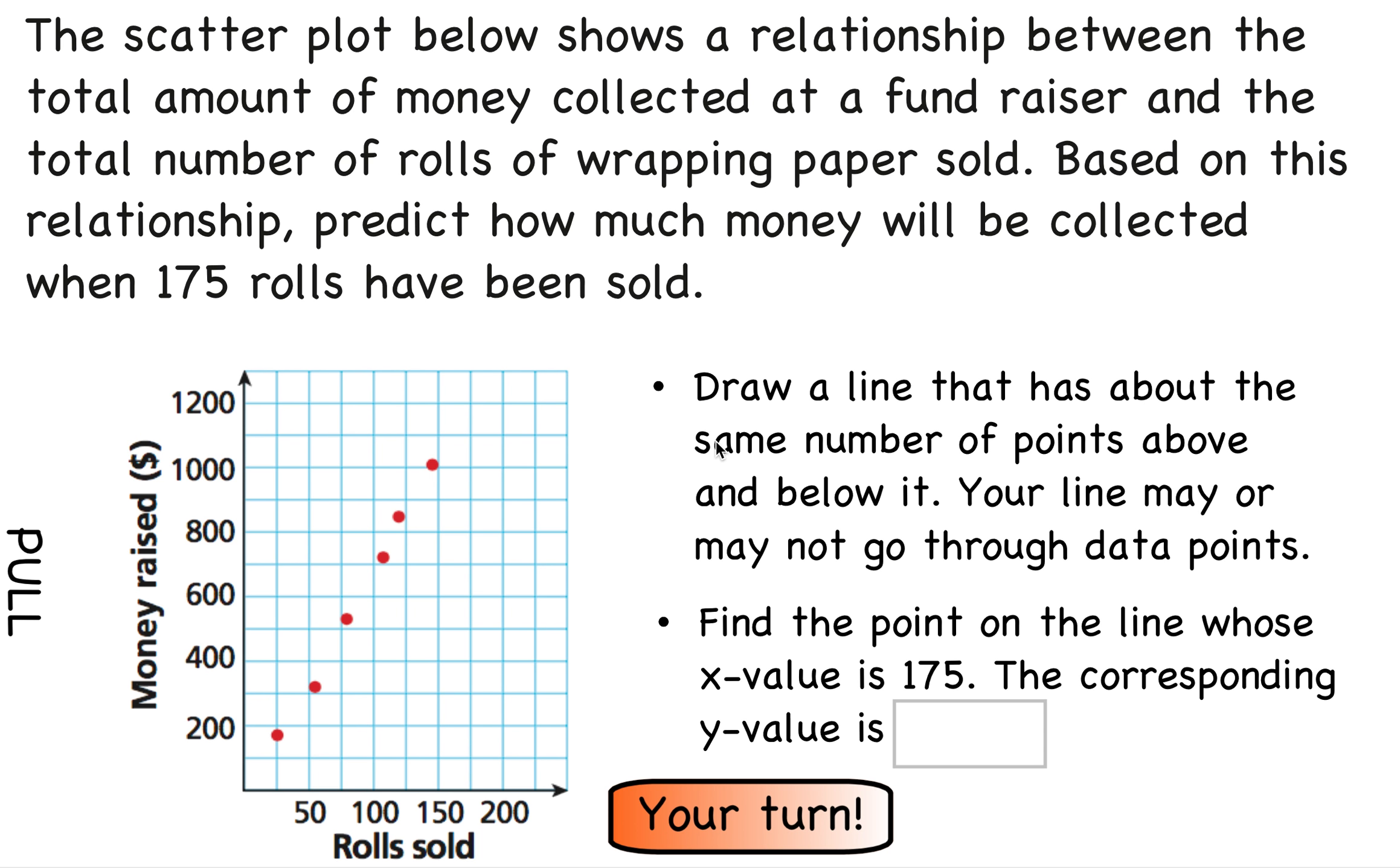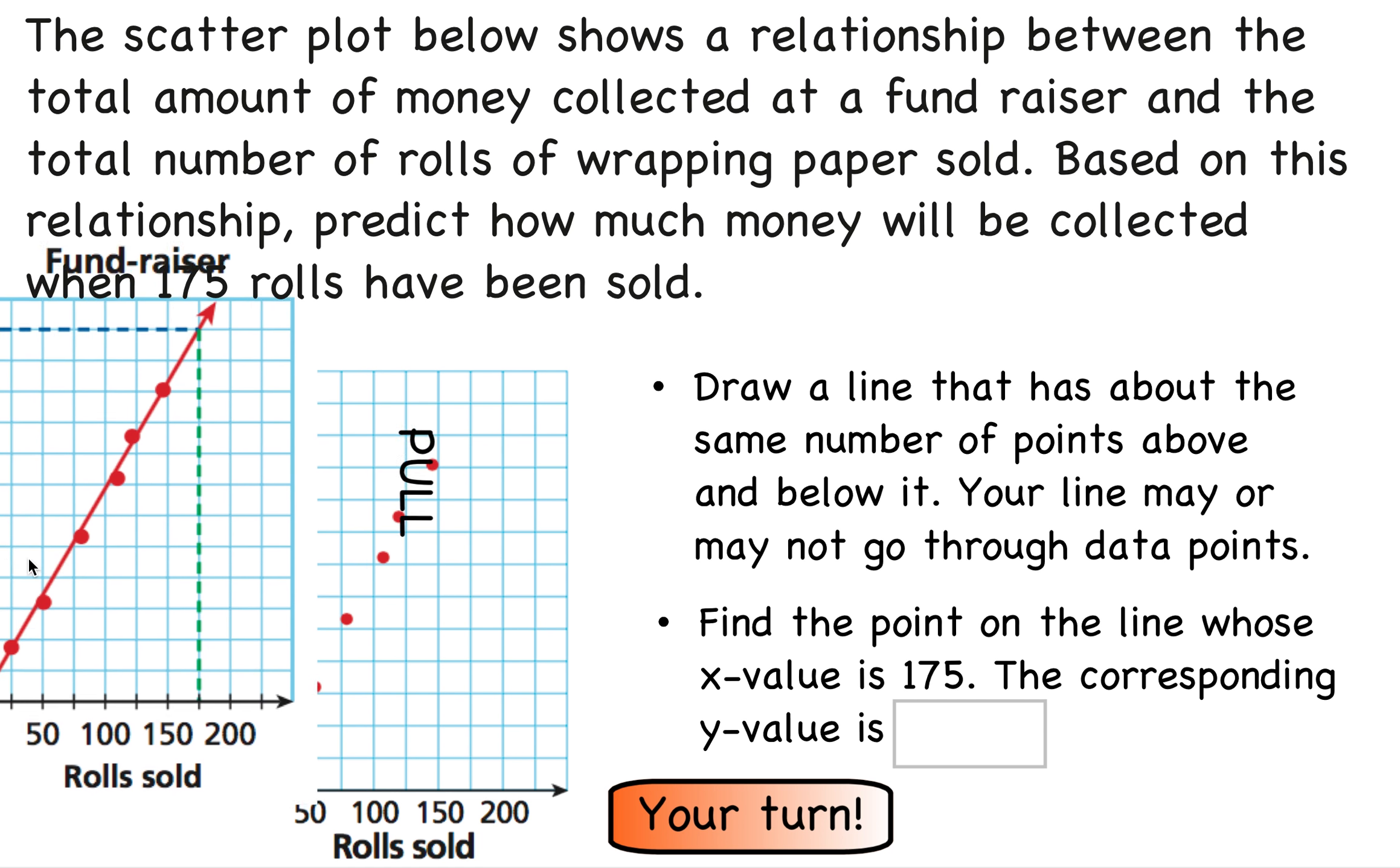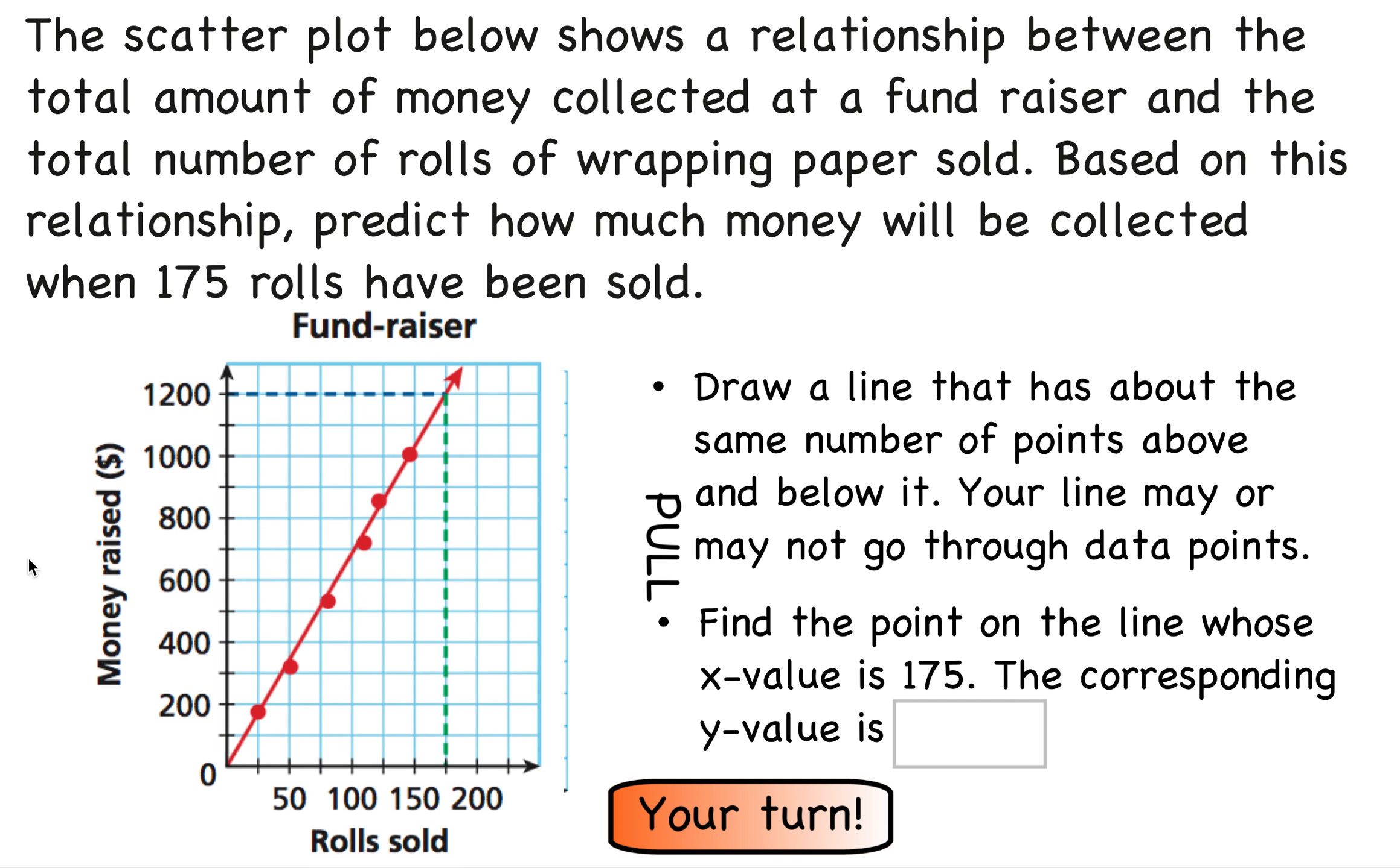Here's another example. It says the scatter plot below shows a relationship between the total amount of money collected at a fundraiser and the total number of rolls of wrapping paper sold. So based on the relationship, predict how much money will be collected when 175 rolls have been sold. So the first thing we want to do is we want to be able to draw a line that has about the same number of points above and below the line that we're going to draw. This is our trend line. Your line may or may not go through the data points. So here is an example of the trend line that we might draw.